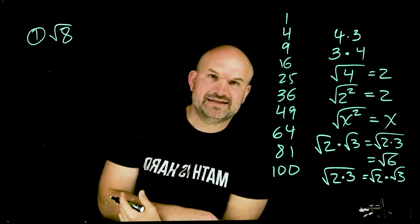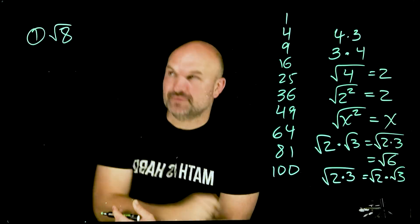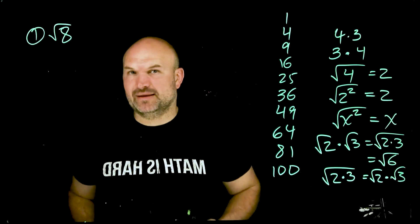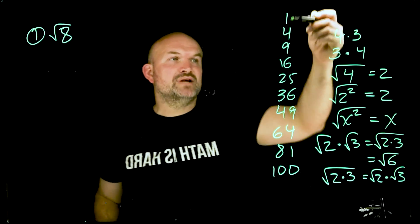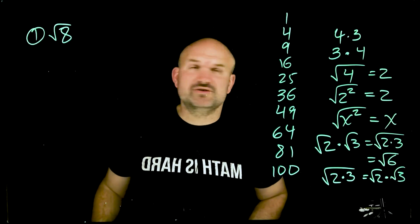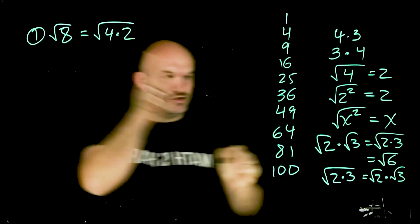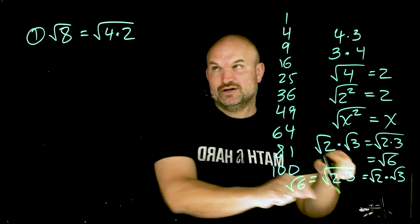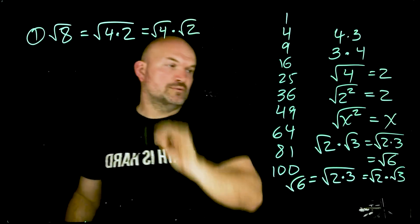Our first example is the square root of 8. How can we simplify that? As you recognize, 8 is not a perfect square number. To simplify, I want to rewrite 8 as a product of two numbers where one of them is a perfect square, because if I can have a perfect square factor, I know I can take its square root. Looking at factors of 8, I can rewrite it as 4 times 2.